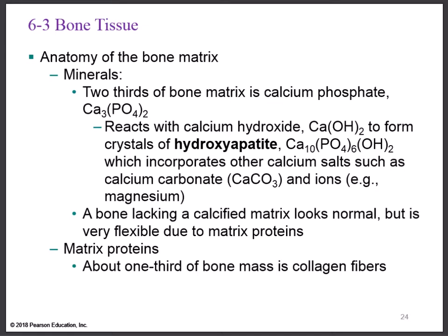Two-thirds of the bone matrix is made up of calcium phosphate. This calcium phosphate interacts with another bone salt called calcium hydroxide. Once those two interact, they form a hardened crystal known as hydroxyapatite, which gives the bone its hardness. As hydroxyapatite forms, it incorporates other calcium salts such as calcium carbonate, as well as ions like magnesium and fluoride.